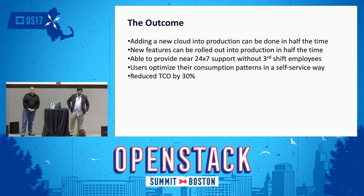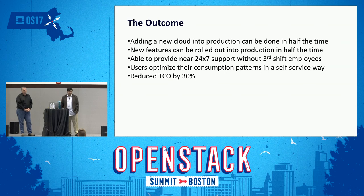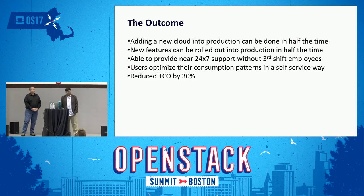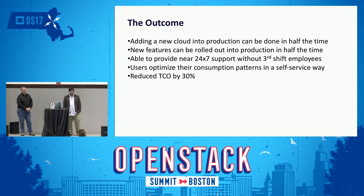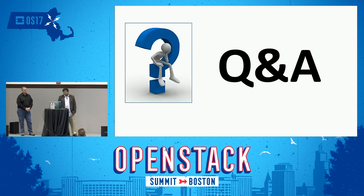The results of addressing these challenges: we can roll out a new cloud in half the time we used to, we can roll out new features in half the time, we're able to provide near 24x7 support without hiring third-shift employees. We've enabled users to optimize their consumption patterns in a more self-service way, and we've reduced our overall TCO by 30%. There are definitely savings to be had because of OpenStack and everything we've done with it.